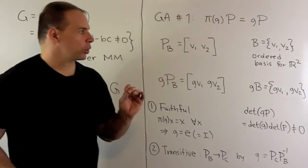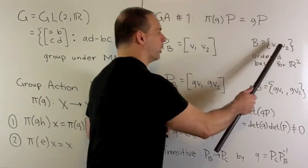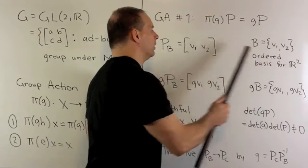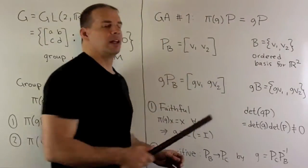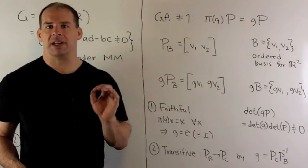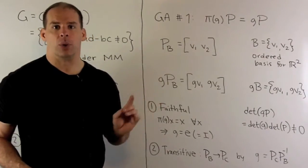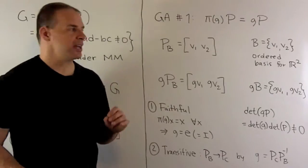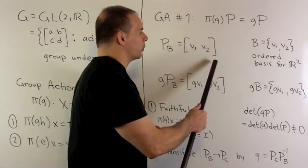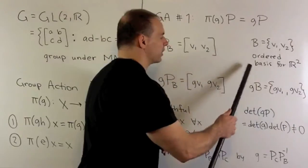Conversely, if I have an ordered basis for R², V1, V2, we form the basis matrix. That matrix is going to have determinant non-zero, so it's going to be an element in GL(2,R). So, we have this correspondence between elements of GL(2,R) and ordered bases for R².